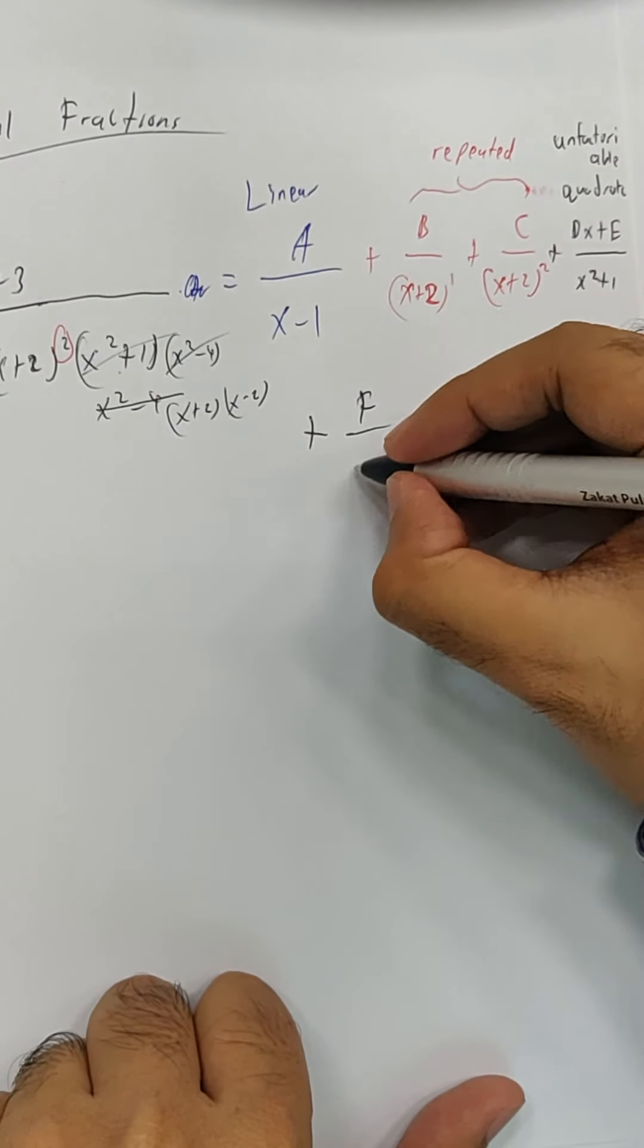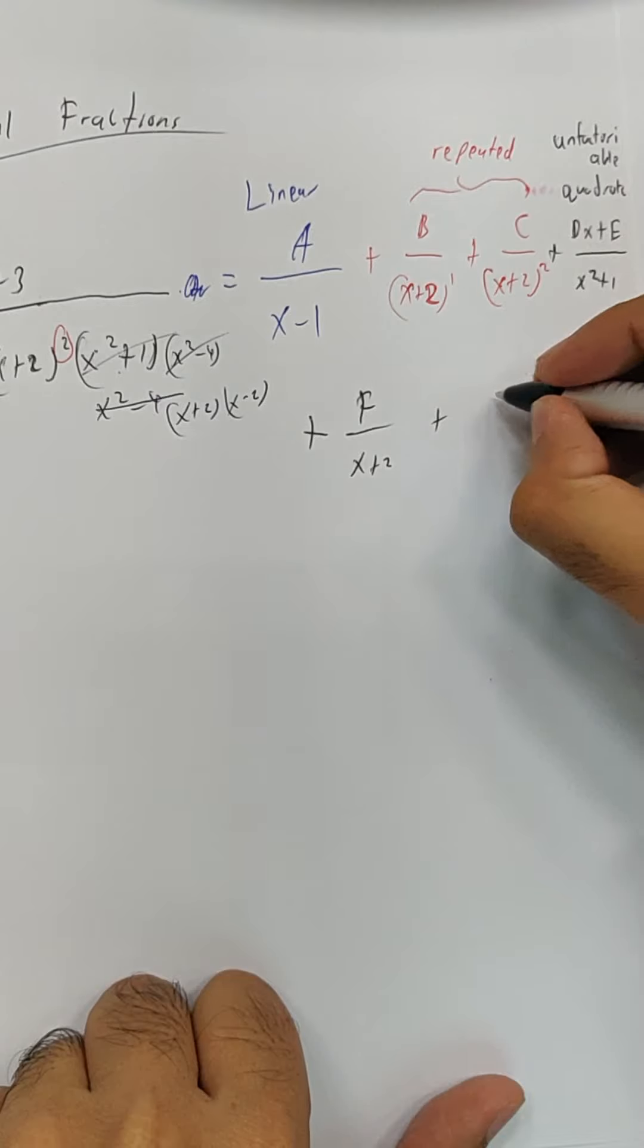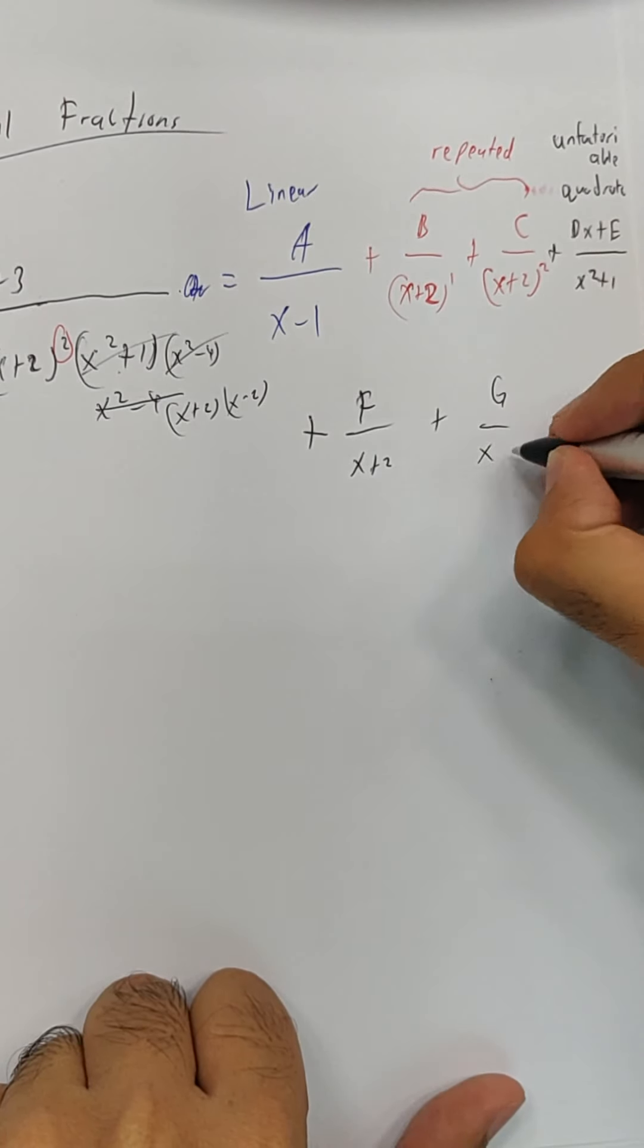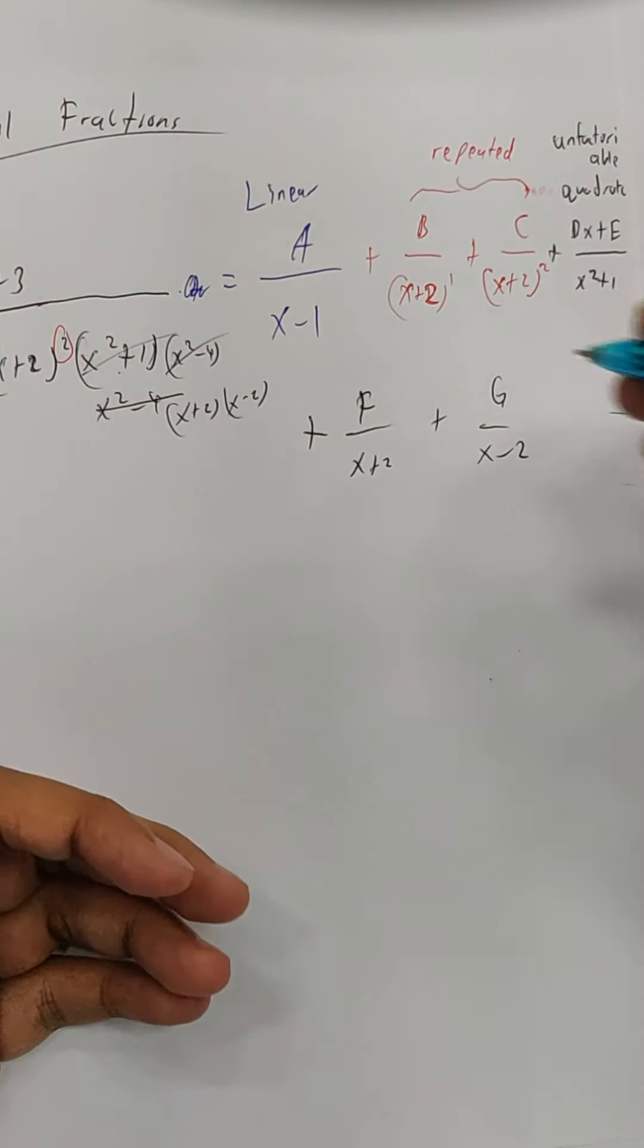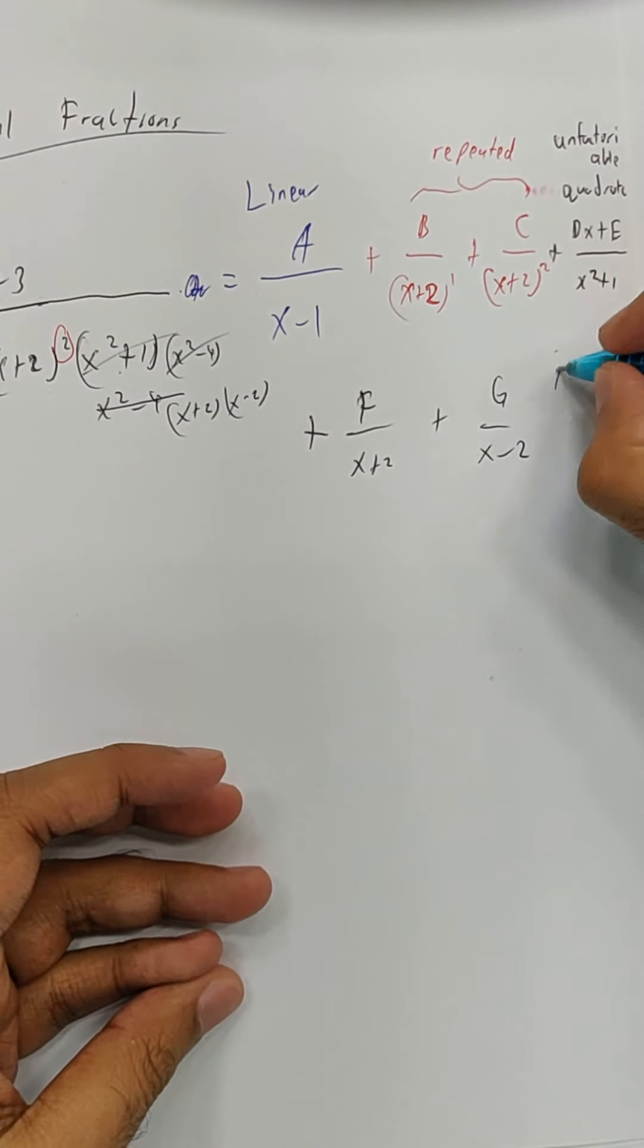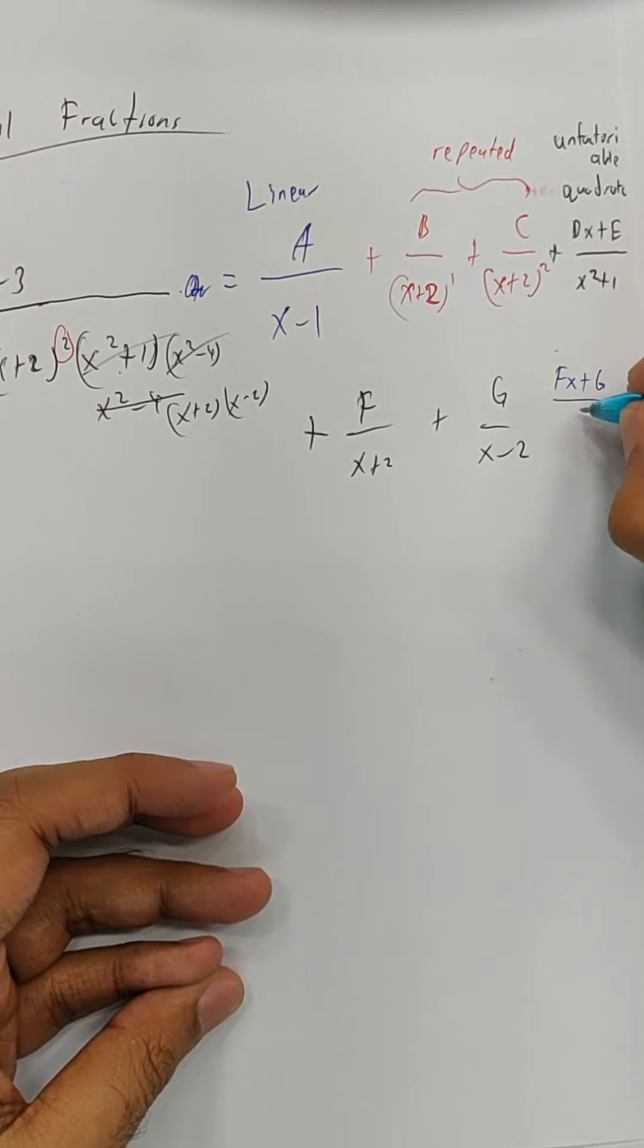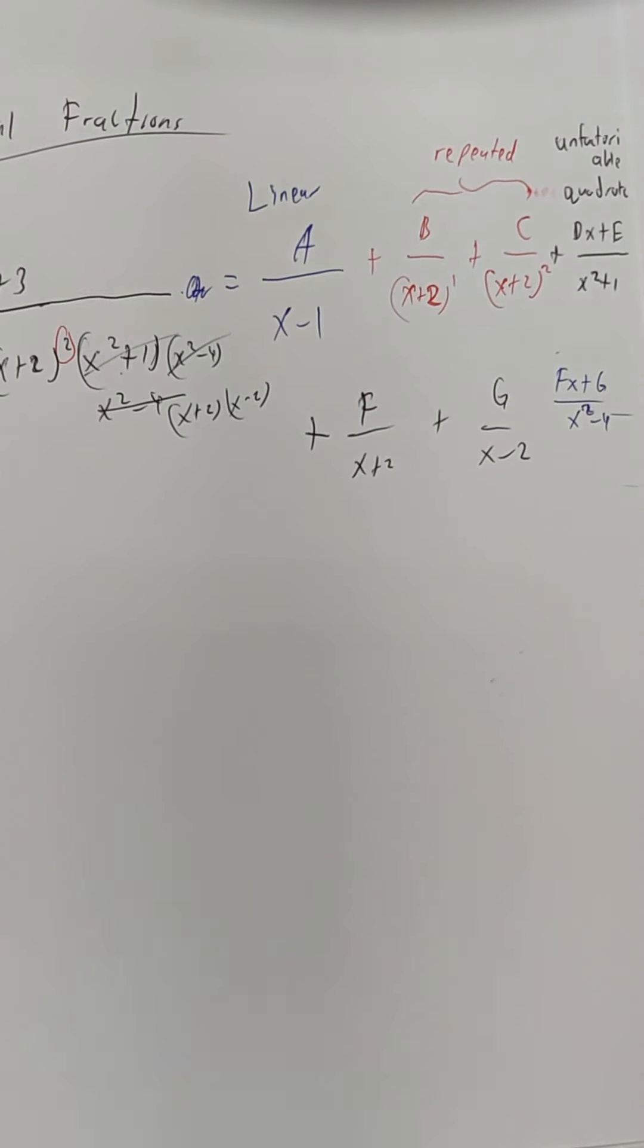So, it's supposed to be f over x plus 2 plus g over x minus 2. If you say just now, it's actually fx plus g over x squared minus 4, you can say 10 marks goodbye for your life. Alright? So be super careful on that part. It's a quadratic, but is it an unfactorizable quadratic? Be super careful.